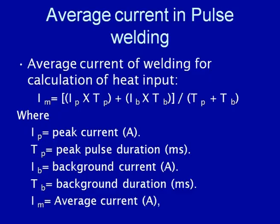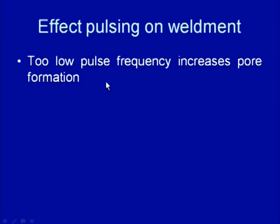When heat is supplied in an interrupted manner — with pulse current periods and base current periods — low pulse frequency affects the desired microstructure and soundness of the weld joint. A low pulse frequency means very low heat input during welding because the peak current will be there for shorter duration and the base current for longer duration. However, too low a pulse frequency means very low heat input and very high cooling rate for the weld metal, increasing the tendency of porosity formation.